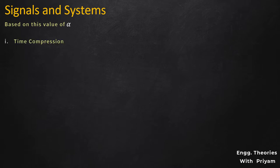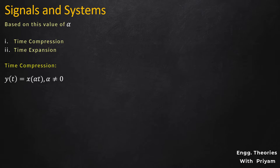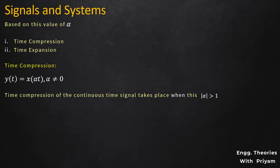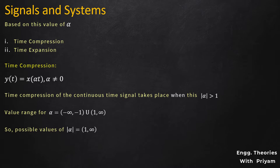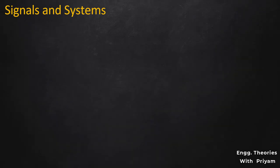Based on the value of alpha, time scaling can be of two types: compression of the signal (time compression) or expansion of the signal (time expansion). Time compression of the continuous time signal takes place when the modulus of alpha is greater than one. If this condition is true, alpha will have the value range from minus infinity to minus one, or one to infinity, and the modulus of alpha will always be positive and greater than one. Mathematically, time compression is given by Y(T) = X(alpha*T) where alpha lies between one and infinity.